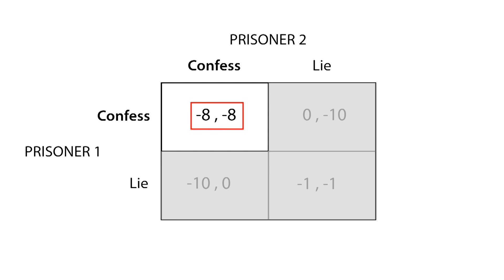This example of elimination of dominated strategies was easy to solve, since both players had a dominant strategy. However, in some games, such as the Battle of the Bismarck Sea, not all players have a strictly dominant strategy.